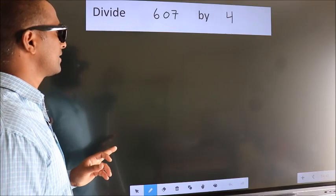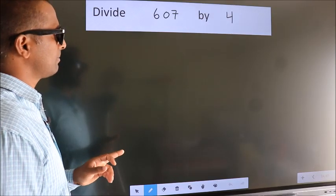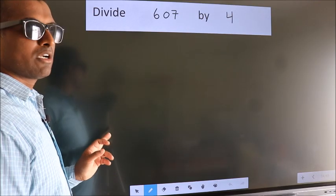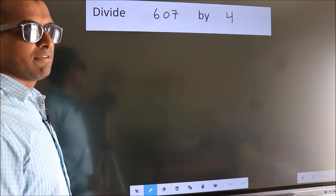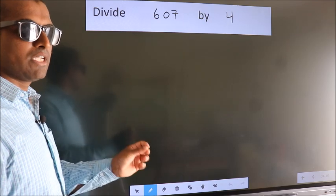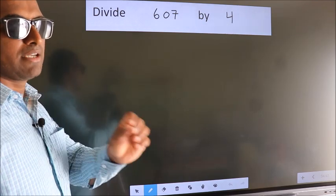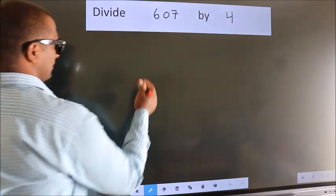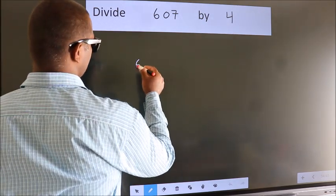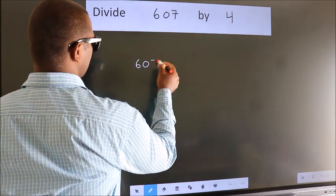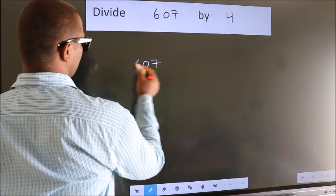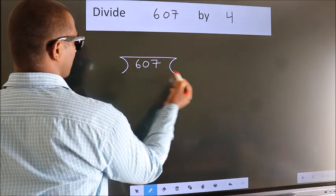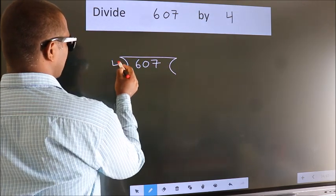Divide 607 by 4. To do this division, we should frame it in this way: 607 here, 4 here.